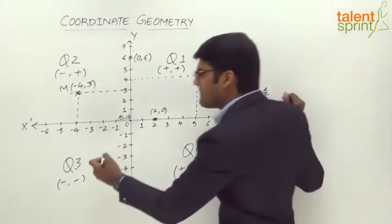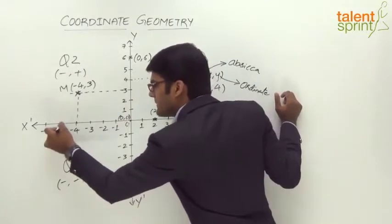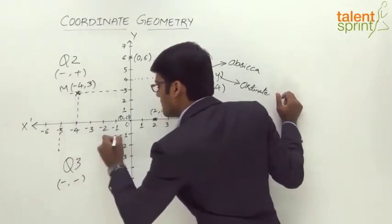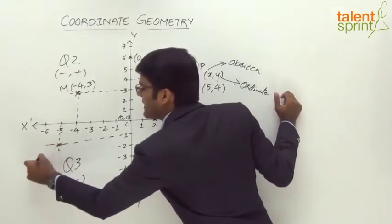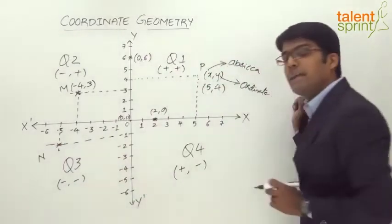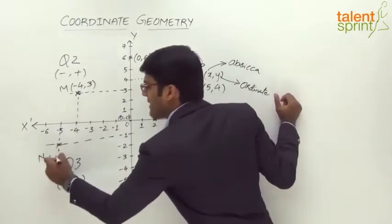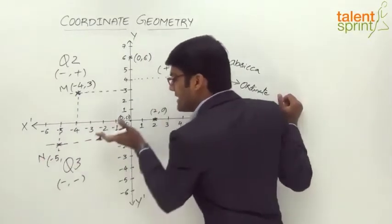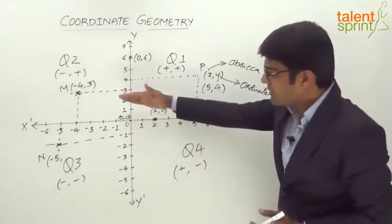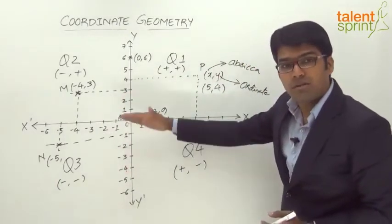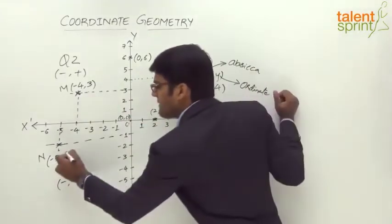Likewise, let's say we have a point N in quadrant 3. The horizontal distance is -5, whereas the vertical distance is -1. We are coming below the origin on the y-axis, which is described by the negative y-axis. So N is described as (-5, -1).